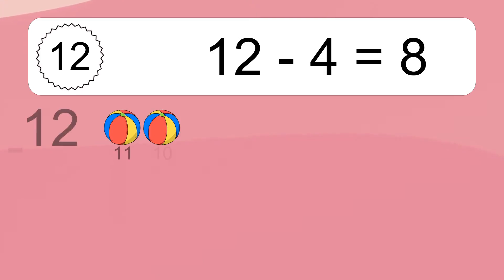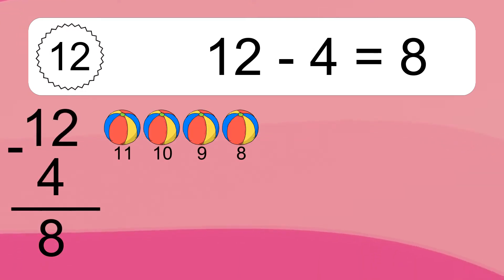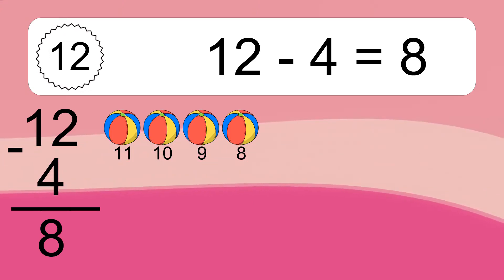12 minus 4 equals what? 12 minus 4 equals 8. Let's count it: 11, 10, 9, 8.